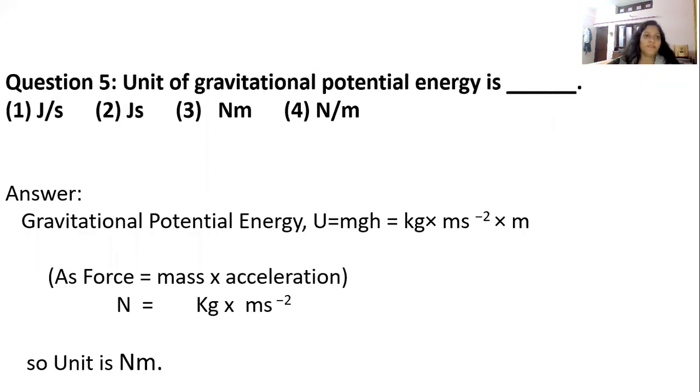Question number 5. What is the unit of gravitational potential energy? Answer is third, Newton meter. How? Gravitational potential energy, we can represent it with U. U = mgh. M is mass, g is gravitational force, h is height.